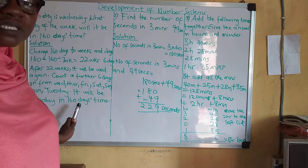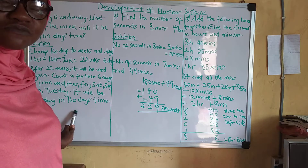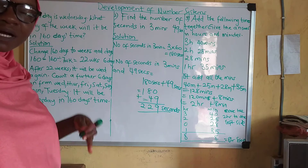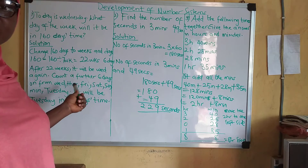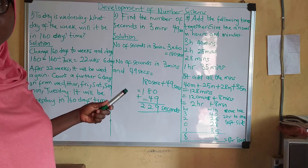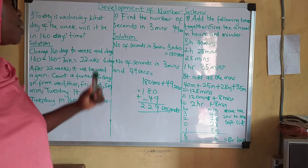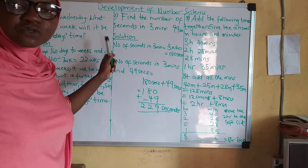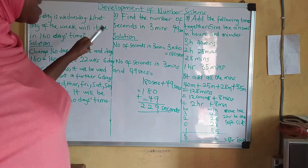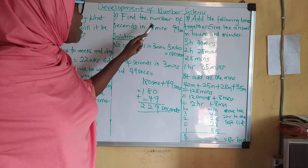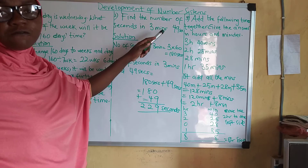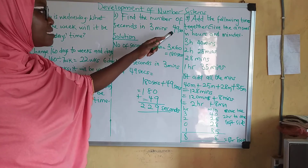Is that clear? So please, if you don't understand this video, kindly pause and go back and go over this video again as many times as possible until you get the concept. Thank you. Now, let's move to this second example. Find the number of seconds in 3 minutes and 49 seconds.